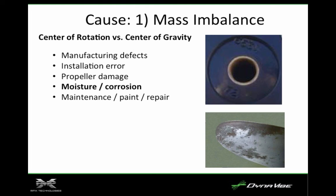We can see here that there's a moisture corrosion issue. That's typical — it can happen. But proper propeller maintenance using advisory circular 20-37 allows us to make those repairs, and then we'll want to rebalance the prop in order to get it smooth again.